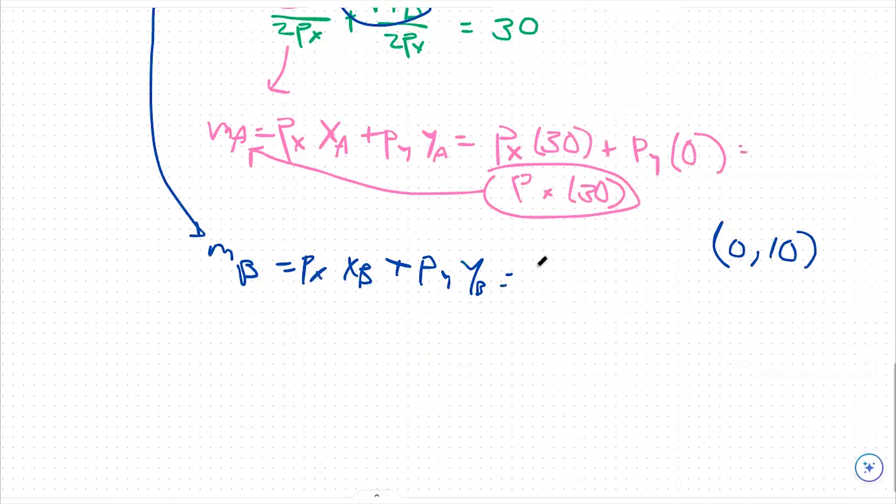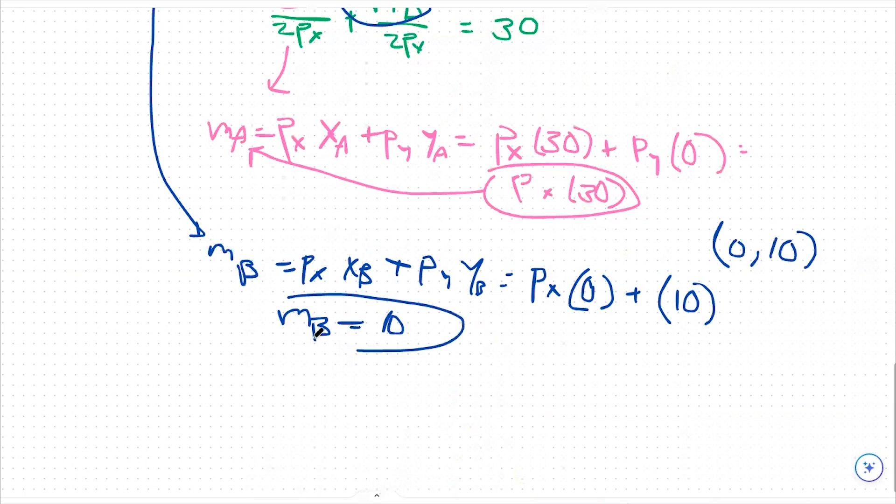So we can say px times zero plus one, which is py times our endowment of 10. So person B's income should just be 10.